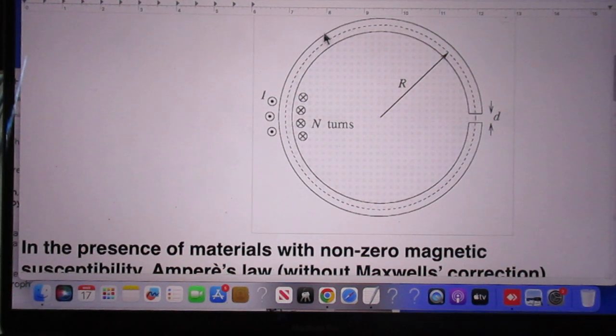Closed loop, this is the dashed curve. It goes through the steel for about 44 cm and then 2.5 mm through the gap. Radius is 7 cm, D is 2.5 mm, 120 turns and the current is 15 amperes.